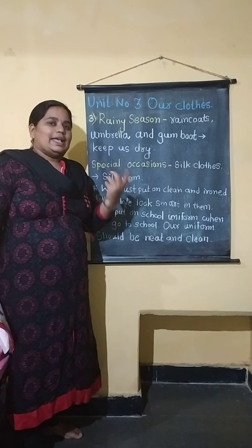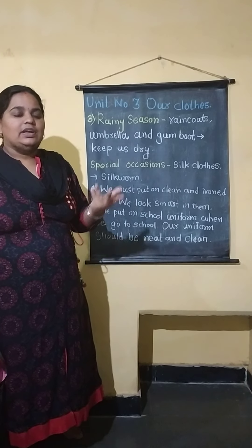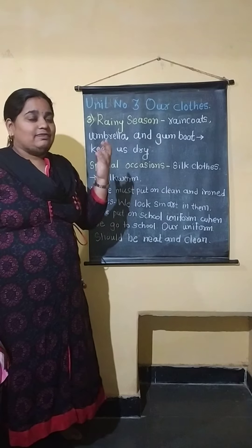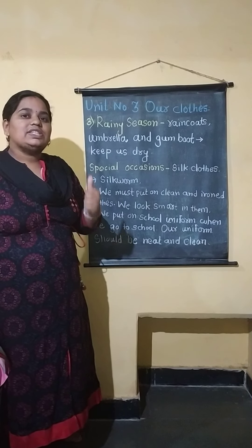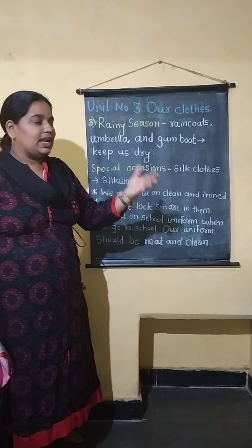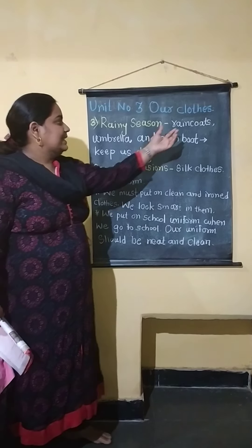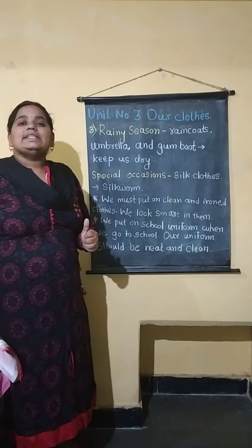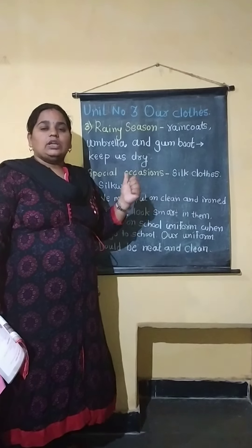As everyone knows, in the rainy season it rains. When it is raining outside, which things will you use to go outside? The first is raincoats, umbrella, and gumboots. These are the things we use in the rainy season.